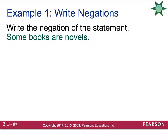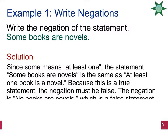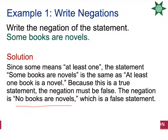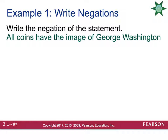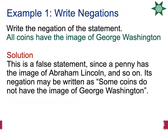Let's write the negation of 'some books are novels.' We change 'some' to 'none' and 'are' to 'are not,' so the negation is 'no books are novels.' For 'all coins have the image of George Washington' — we know this is false — the negation would be 'some coins do not have the image of George Washington.'